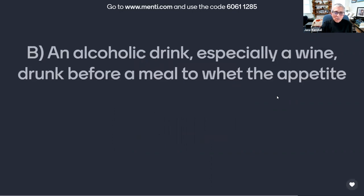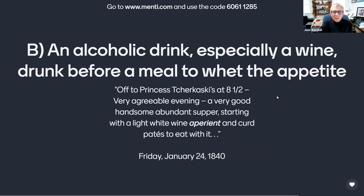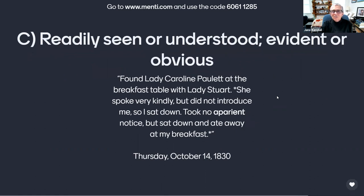Or is it B, an alcoholic drink, especially a wine, drunk before a meal to whet the appetite, as referred to by Anne in her journal entry of Friday, January 24th, 1840, in Russia? 'Off to Princess Cherkasky's at eight and a half, very agreeable evening, a very good, handsome, abundant supper, starting with a light white wine aperient and curd pâtés to eat with it.' Or is it C, readily seen or understood — evident or obvious — as used by Anne in her travel journal entry of Thursday, October 14th, 1830, while traveling with Lady Stewart in the south of France? 'Found Lady Caroline Paulette at the breakfast table with Lady Stewart. She spoke very kindly, but did not introduce me, so I sat down, took no aperient notice, but sat down and ate away at my breakfast.'